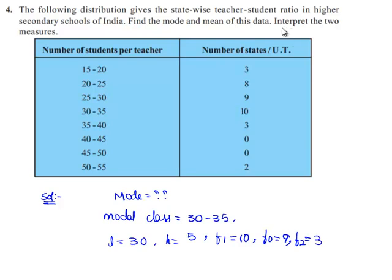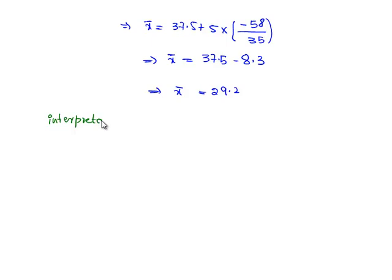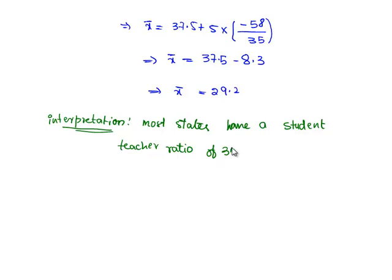They have asked us to interpret the two measures. Interpretation here: mode states have a student-teacher ratio of 30.6, that is mode. And on average, this ratio is 29.2.